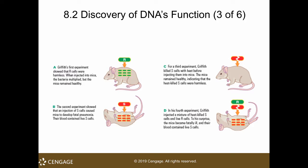When he injected the S strain into mice and the mice died of pneumonia, during autopsies he found live S cells in the blood of the dead mice. In the third set of experiments, he had heat-killed S strain injected into mice, and the mice lived because the bacteria were already dead and did not cause harm.